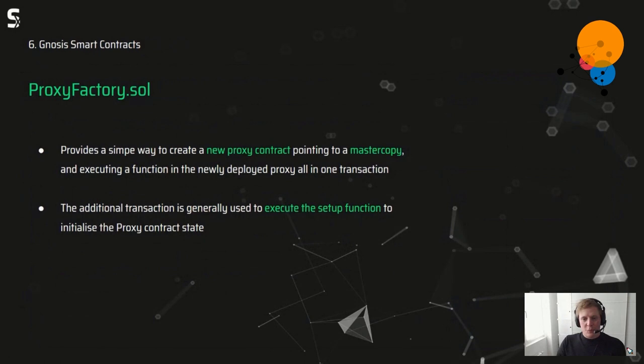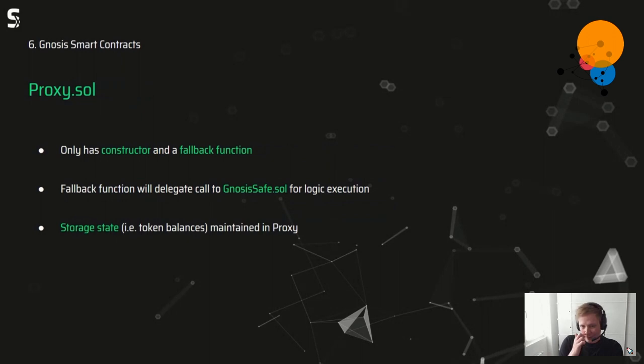The proxy factory creates new proxies and executes the setup function. The proxy contract doesn't do much — there's only a constructor and a fallback function, and everything is delegated to the Gnosis Safe contract. The important thing this proxy contract also does is store state, like the token balance.